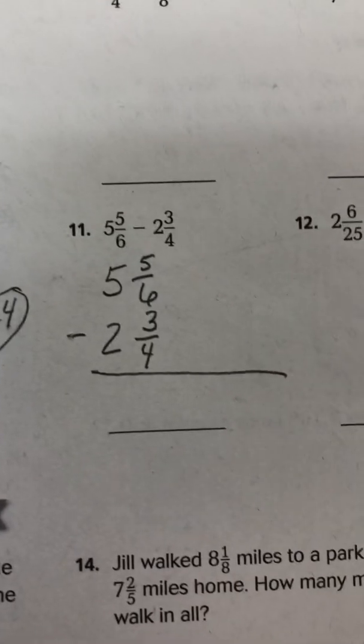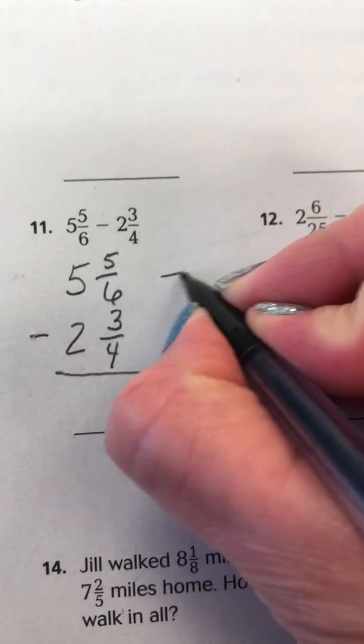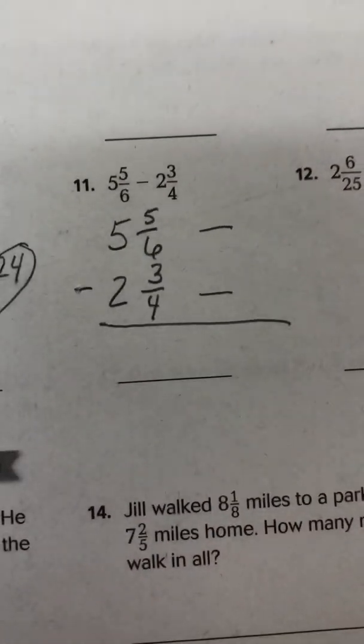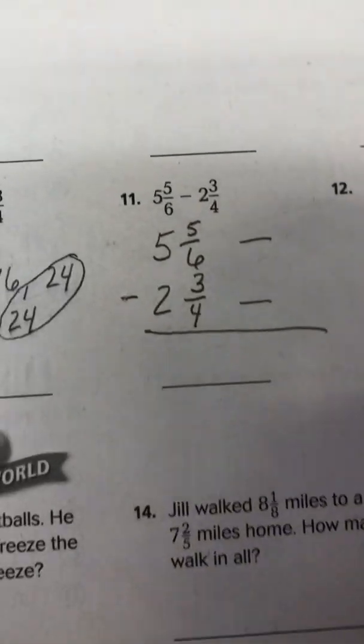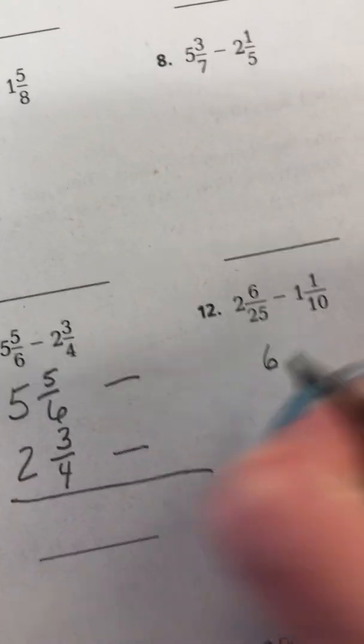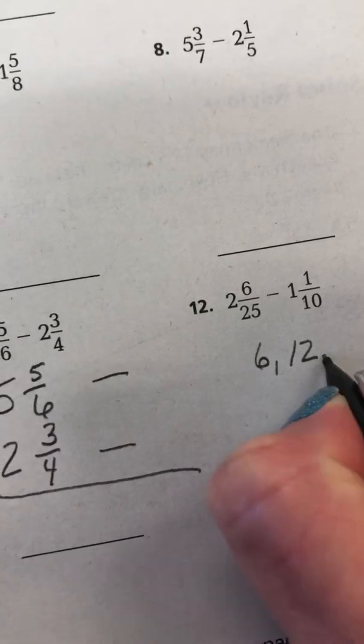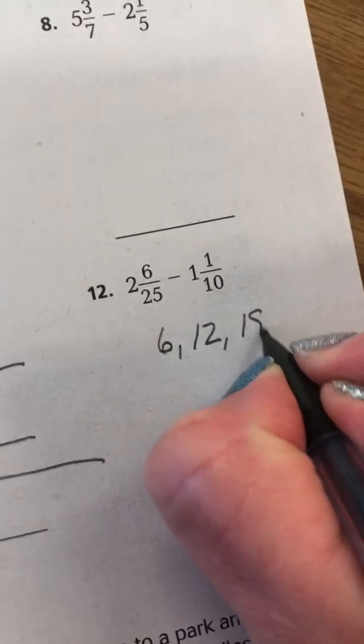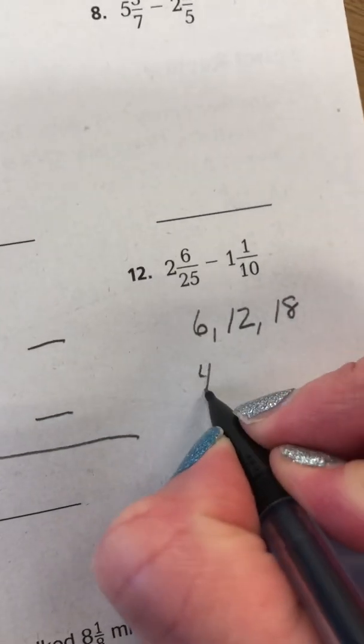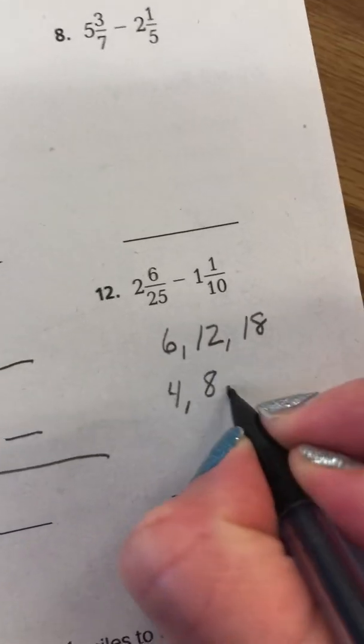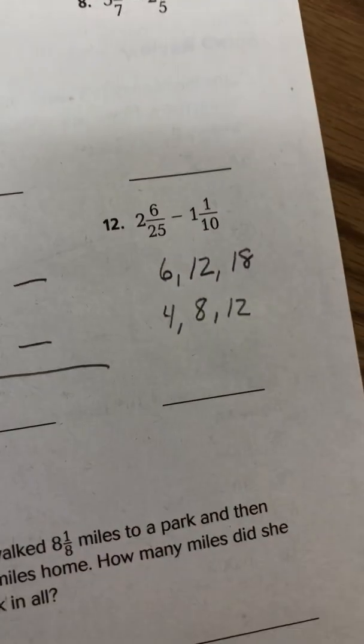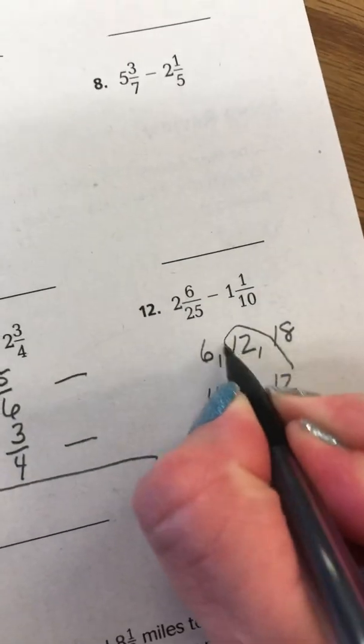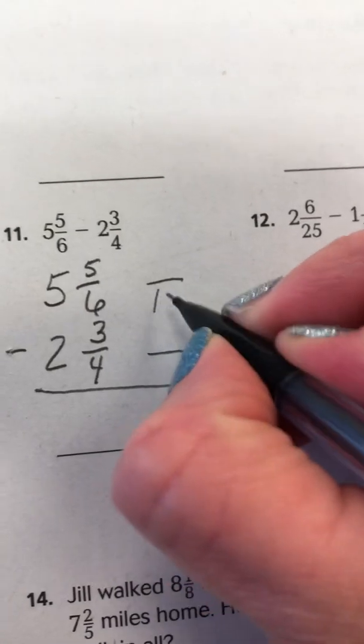So we're going to need a common denominator for 6 and 4. So we're going to list the multiples of 6 and 4. So we found our least common denominator. 6 and 4 is going to be 12. So fill in your denominators.